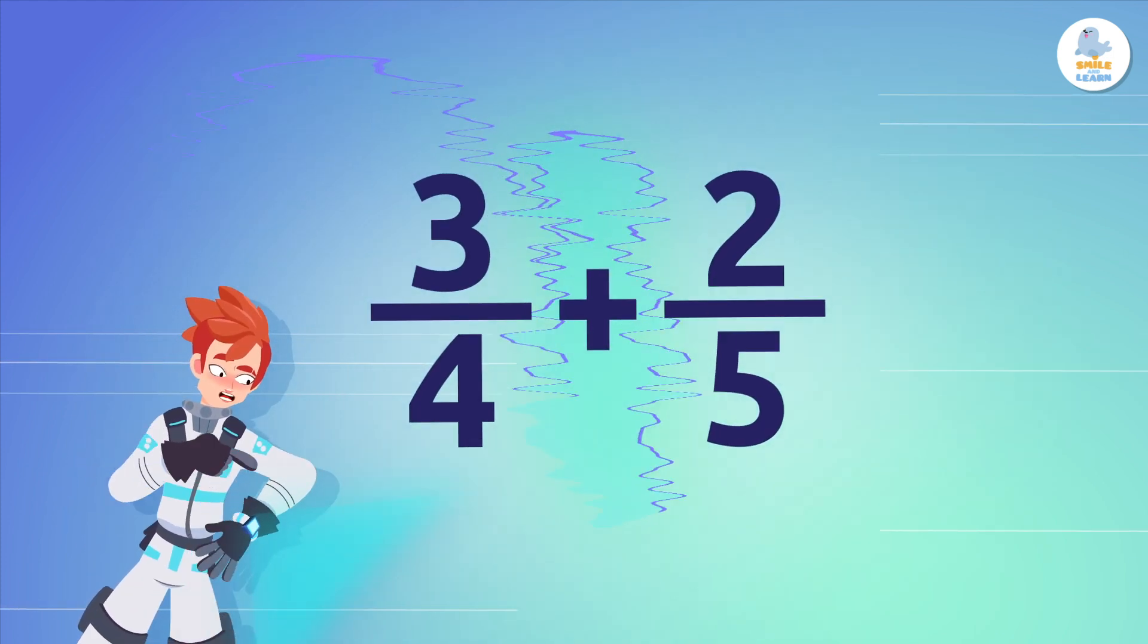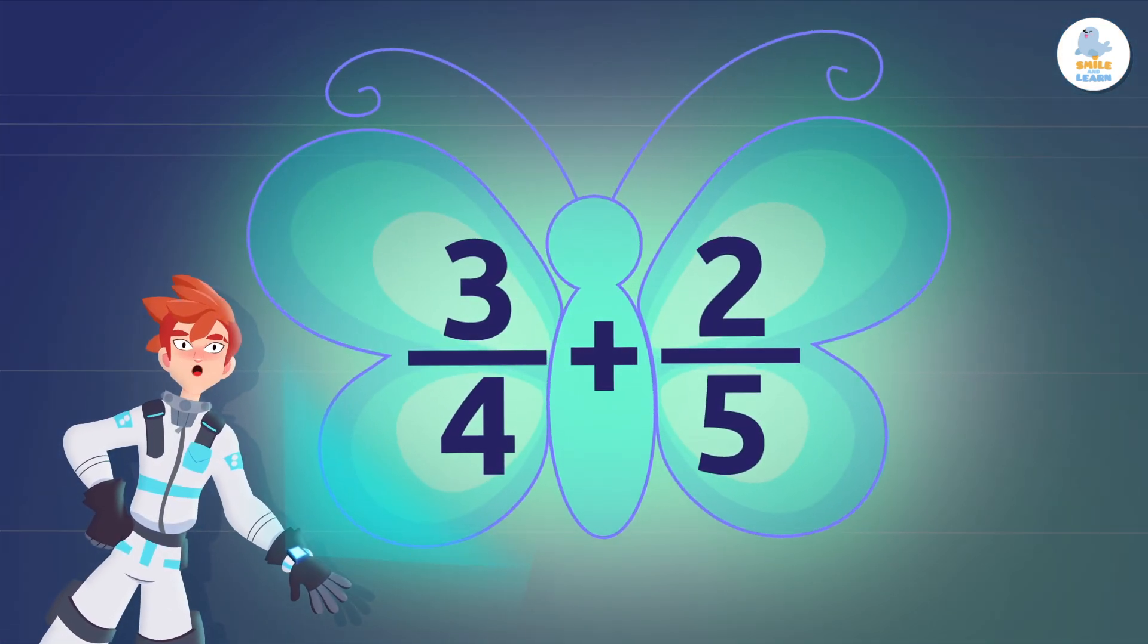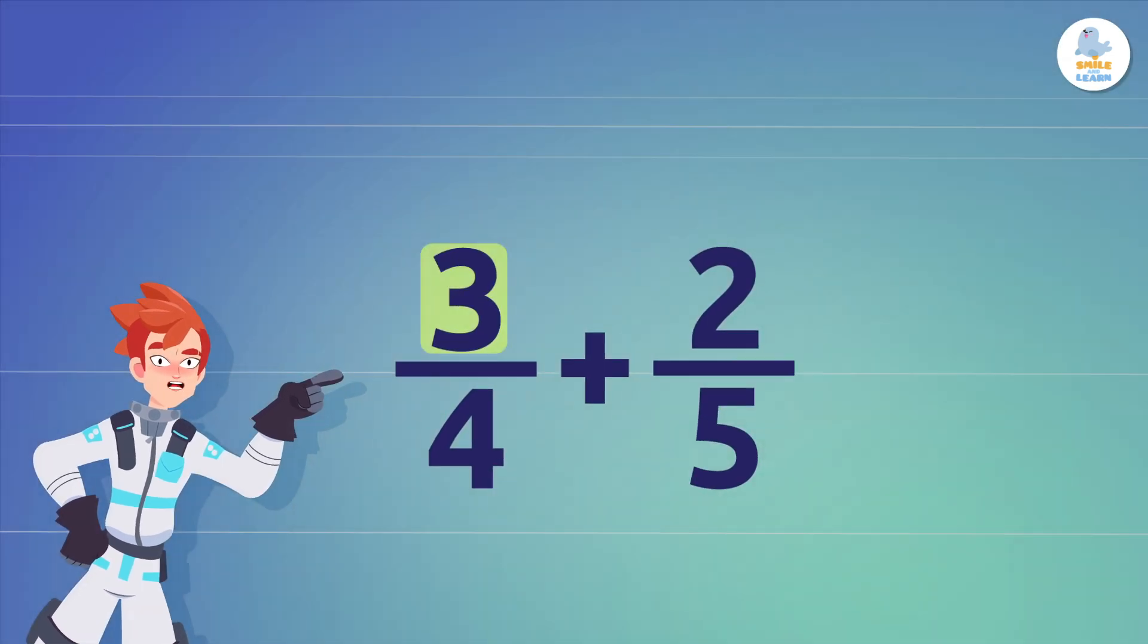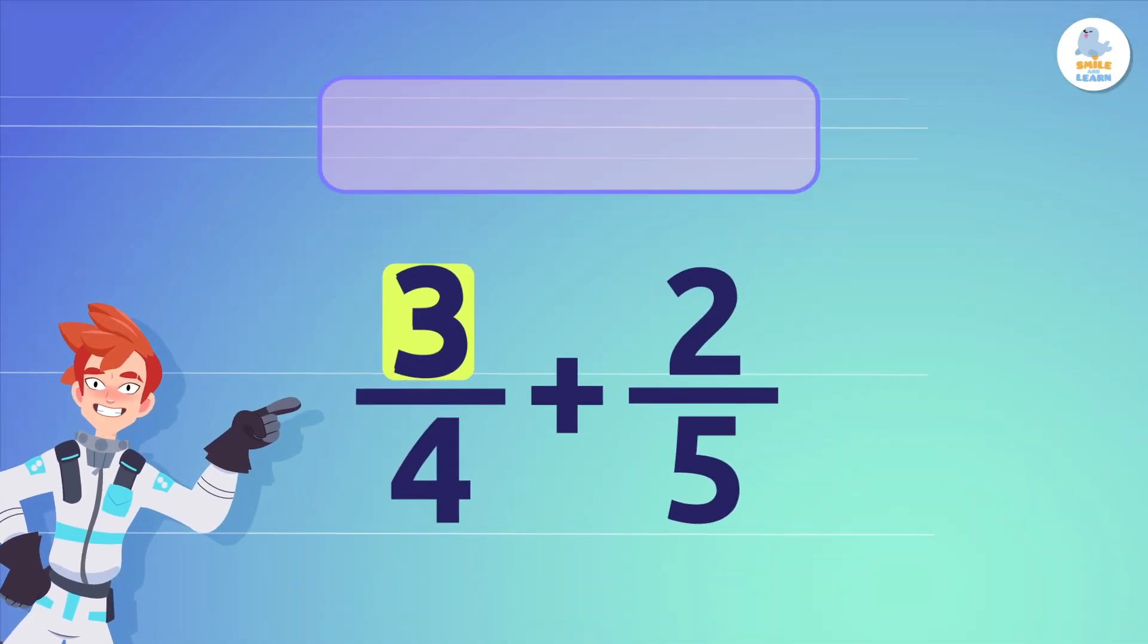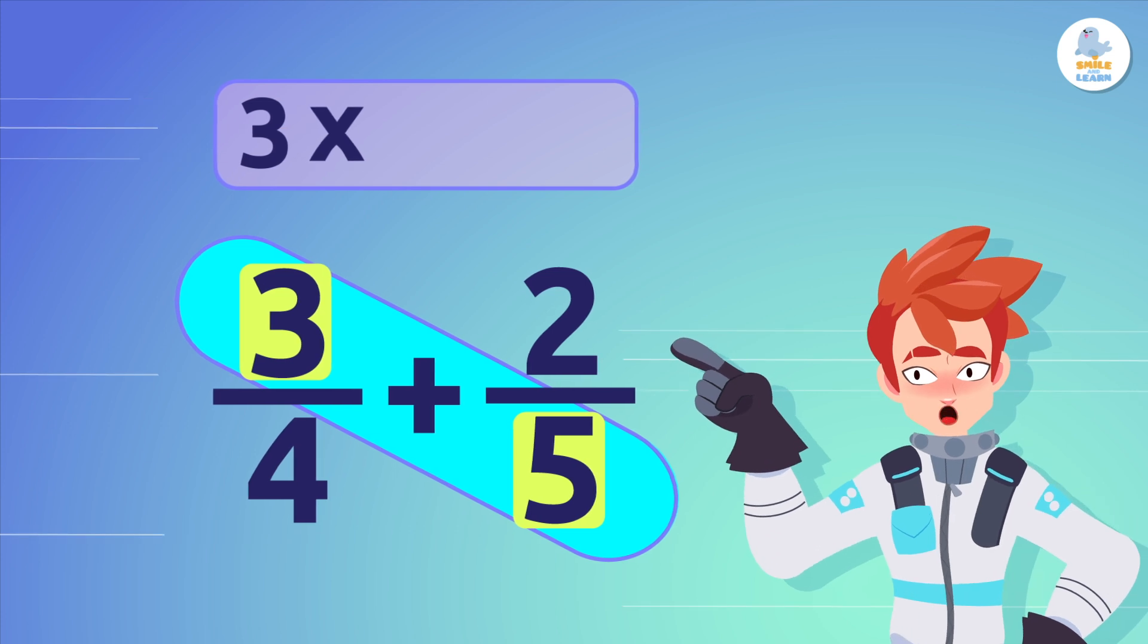First, let's draw the butterfly's wings and antennae to cross multiply. Find the numerator of the first fraction, 3, and multiply it by the denominator of the second fraction, 5.